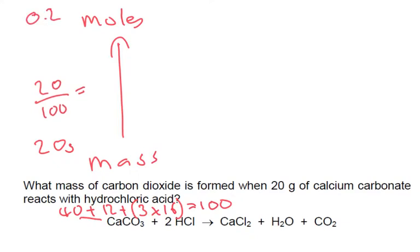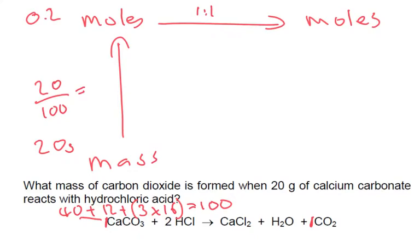Next step, we're going to work out moles on this side. But first we need to look at the ratio. We're looking at calcium carbonate — there's a 1 in front — and we want carbon dioxide, which is also 1. So it's a nice 1 to 1 ratio, meaning we've got the same number of moles: 0.2.